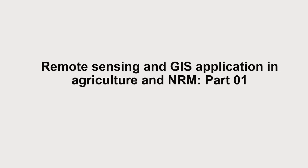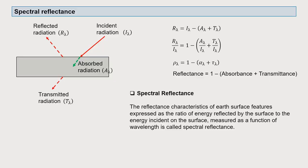In continuation with remote sensing and GIS application in agriculture and NRM, we will today discuss about different curves of spectral reflectance. In the previous lecture we discussed different kinds of spectral types including hyperspectral, the nature of radiation, and how electromagnetic radiation from different surfaces gets sensed by different types of sensors. Today we will focus largely on spectral reflectance and the different types of curves we get from this reflectance.